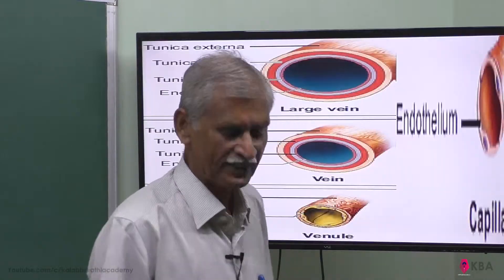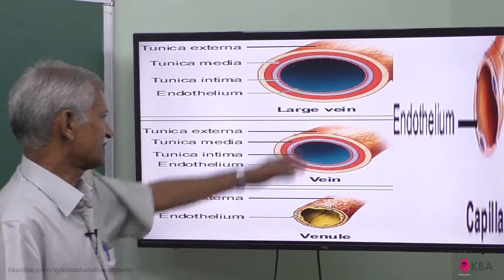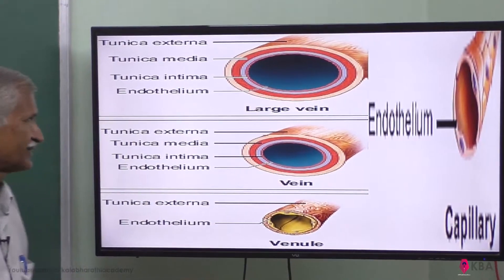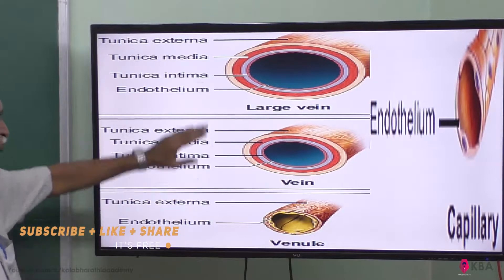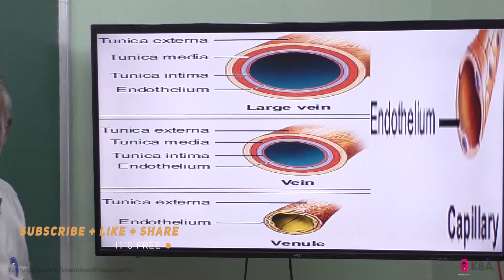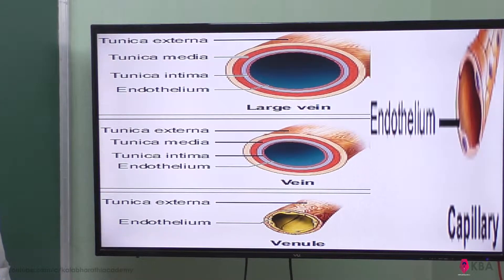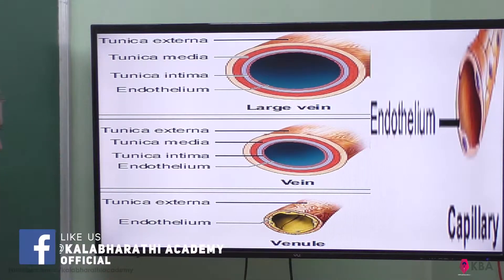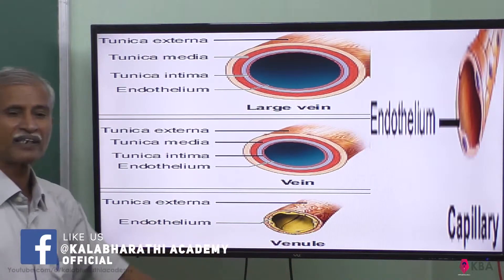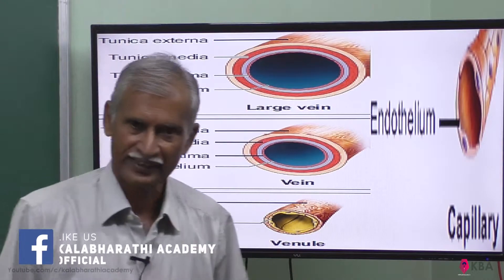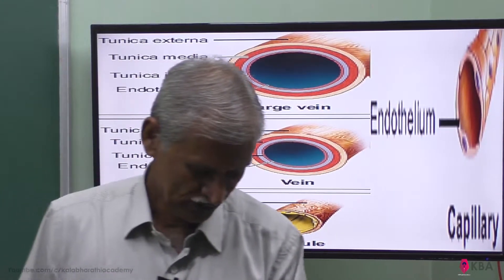In larger veins, three layers are present: external, media, and intima, along with endothelium. In smaller venules within the capillary bed, only the tunica externa and endothelium are present — the middle layer is absent. Thank you students, we will meet again in the next discussion.